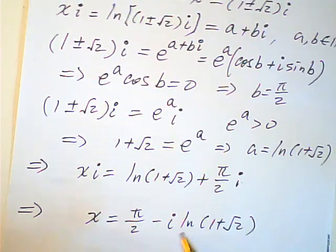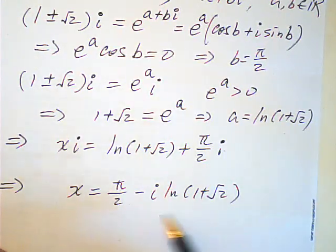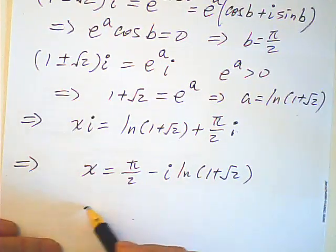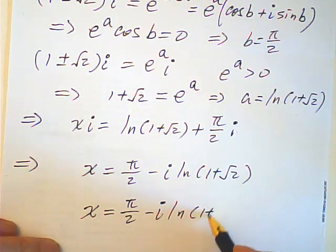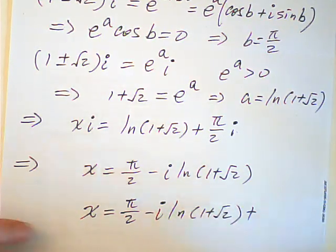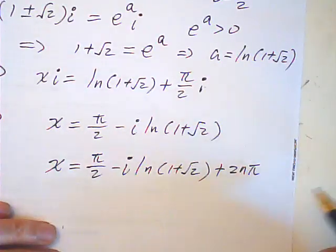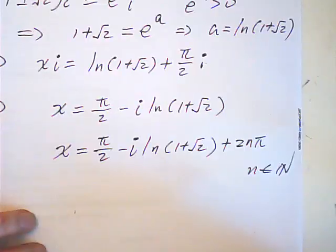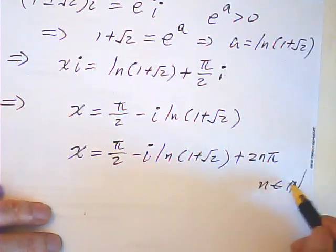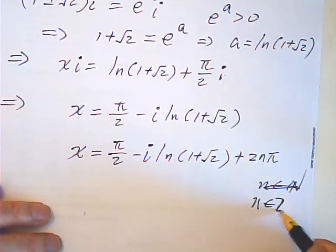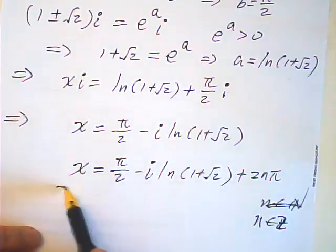Now, that is only for x in one period. So, if you add more period, the general solution would be half pi minus i log of 1 plus root 2 plus 2n pi. No, not natural number. n is an integer or zero. Okay, that is the general solution.